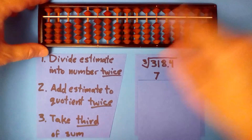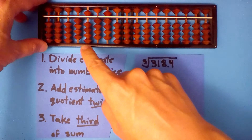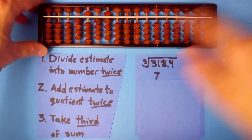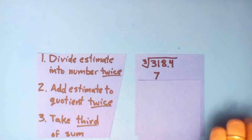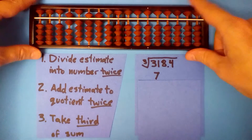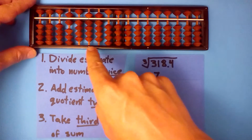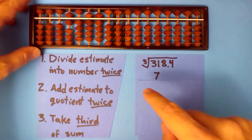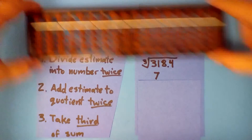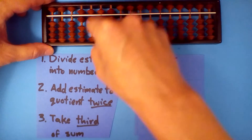When you finish you should have a 4-digit quotient of 4549. Repeat this — divide 7 into this number. Your next quotient should be 6.499. Add your estimate 7 to this twice and divide by 3. When you do that you should get 6.8.